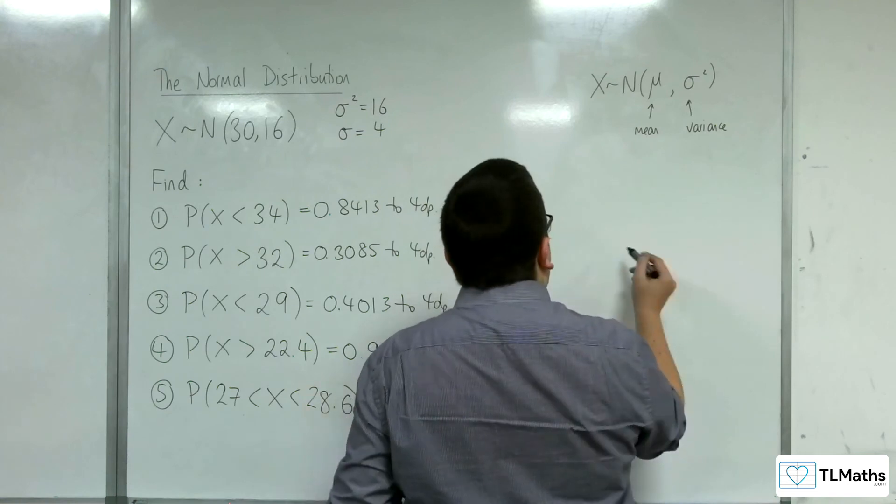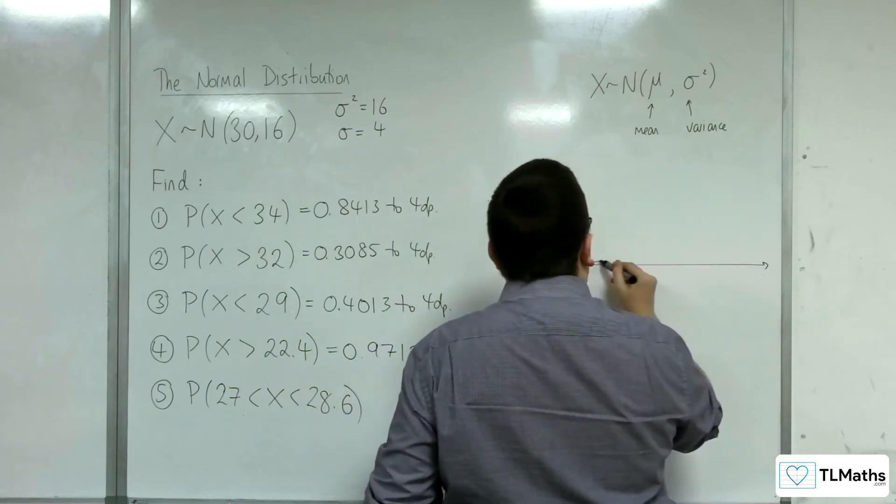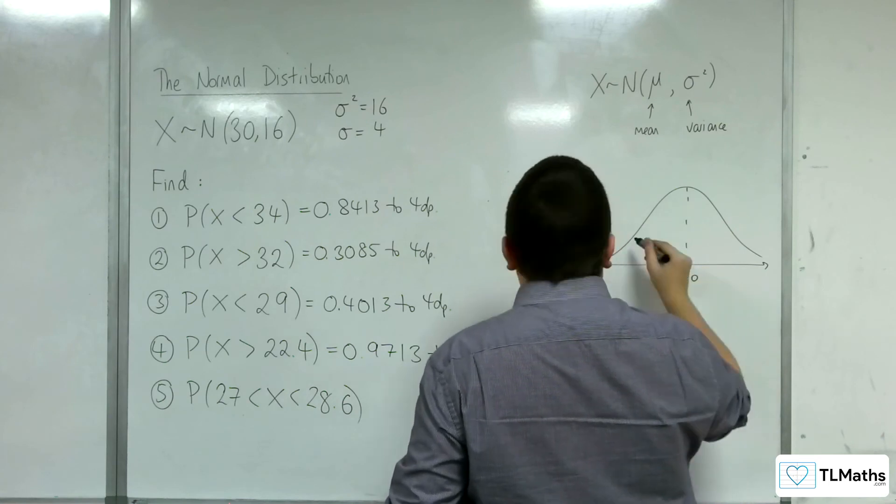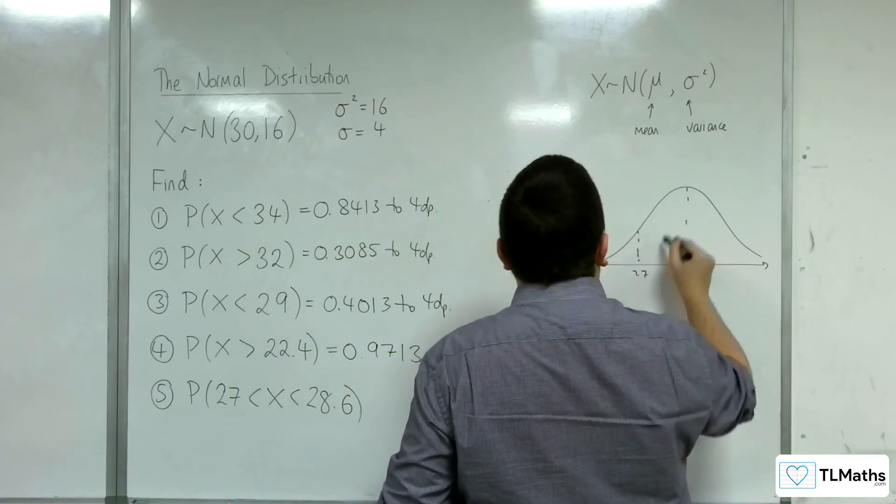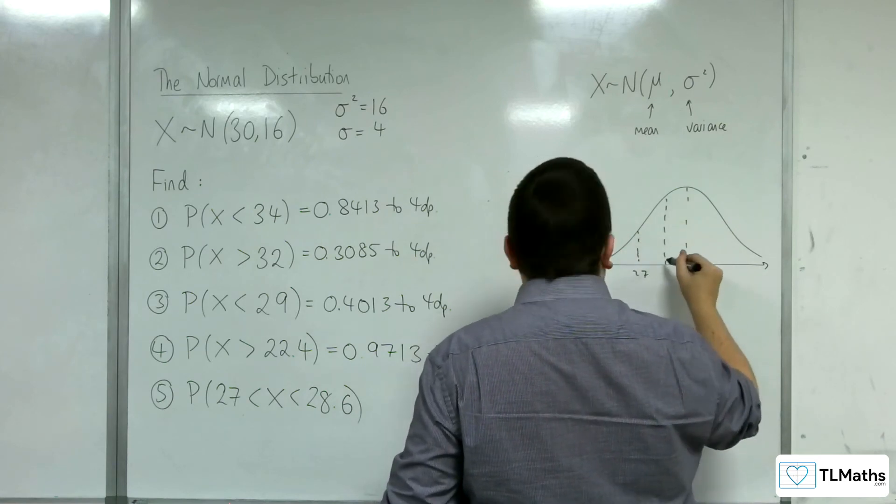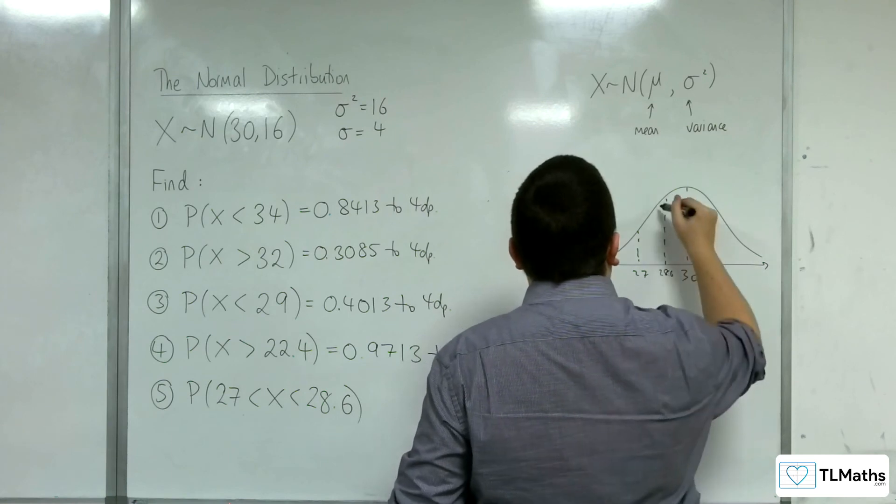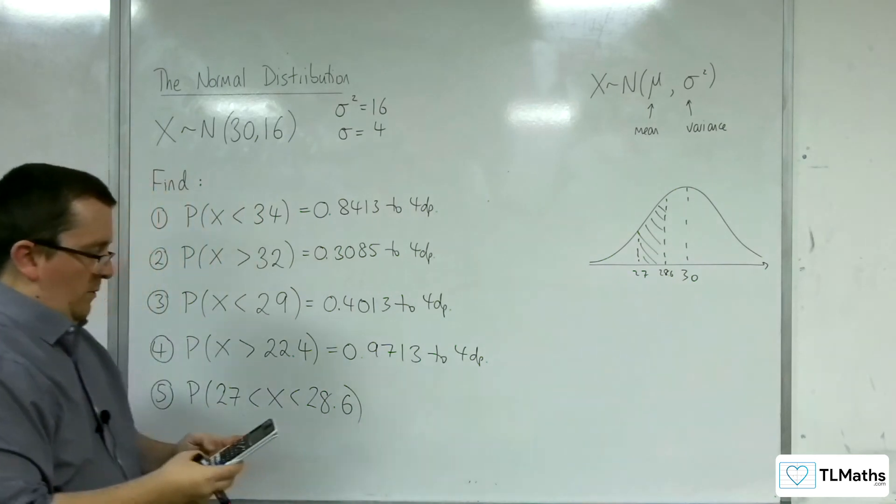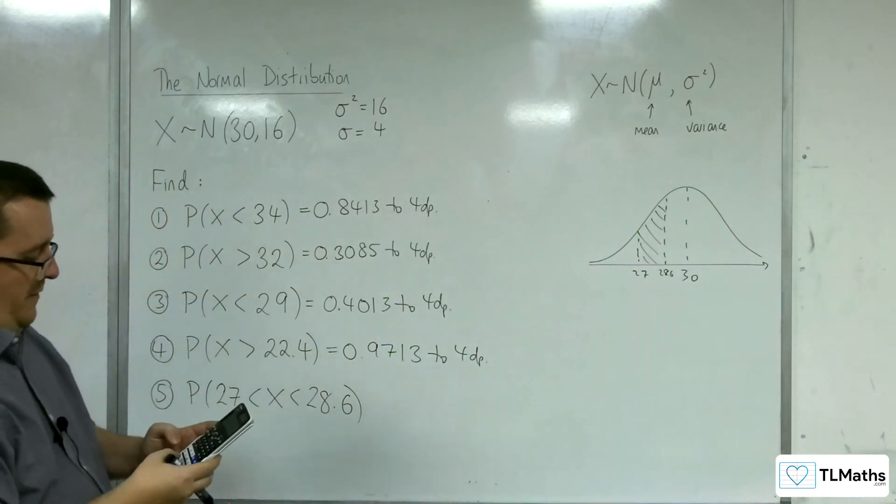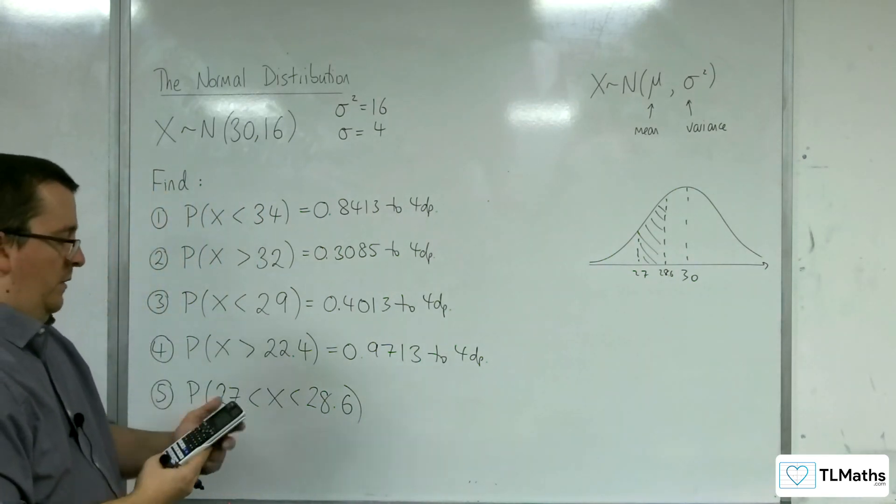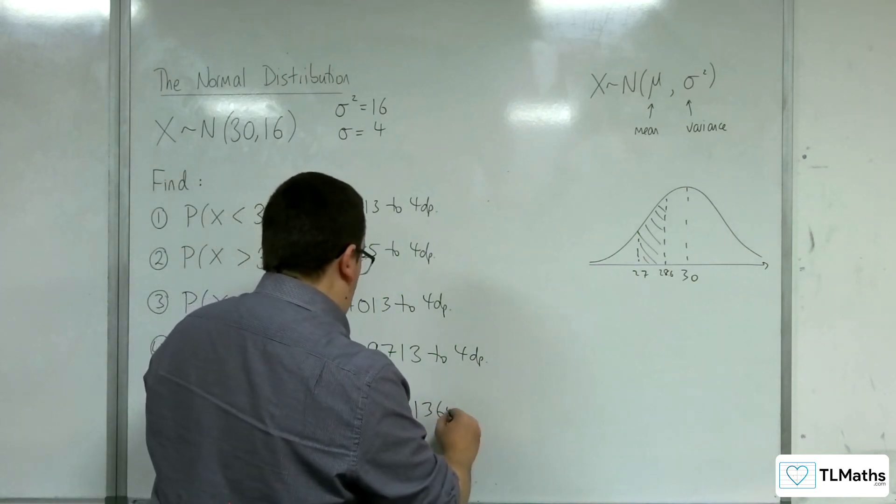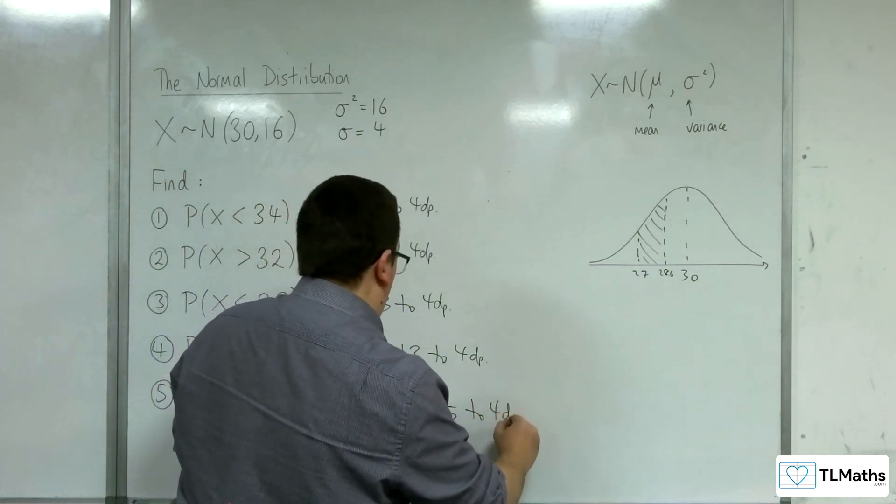All right, last one, number 5. All right, there's 30, so 27 up to 28.6. Okay, so lower value is 27, upper value is 28.6. We should get 0.1365 to 4 decimal places.